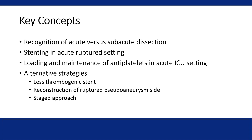Key issues highlighted by this case include recognition of acute versus subacute dissection, stenting in the acute ruptured setting, and challenges in loading and maintaining antiplatelet agents, particularly in a patient in the ICU. Alternative approaches include use of alternative stents, reconstruction rather than sacrifice of the ruptured pseudoaneurysm, and a staged approach to treatment.